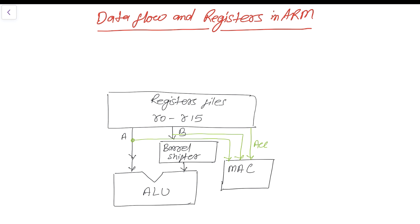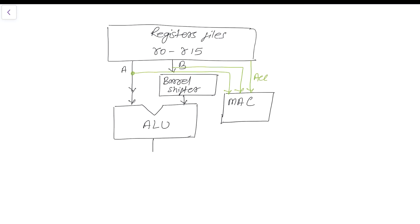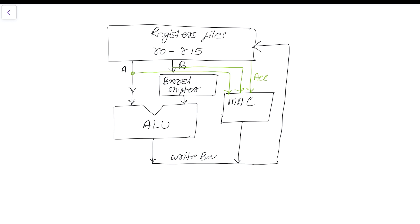Once this is done, the output from the ALU, as well as the output from the MAC, goes directly back to the register file in what is known as a write-back. It comes from data A and from B. Once the ALU produces the result, if the result is decoded as an address of a register, then it produces an address register.